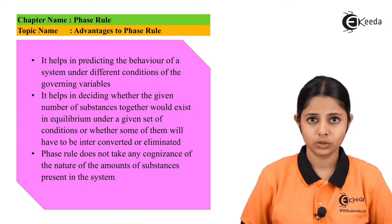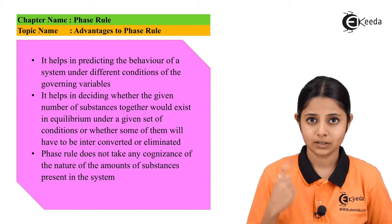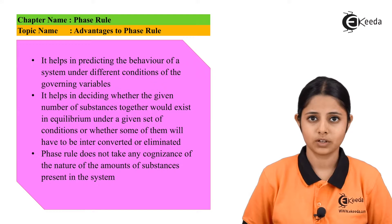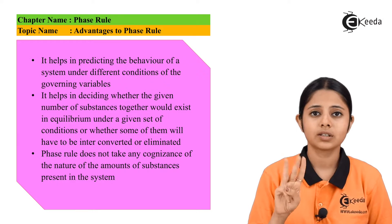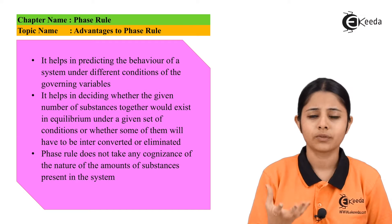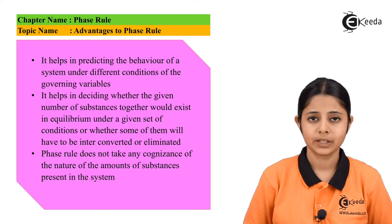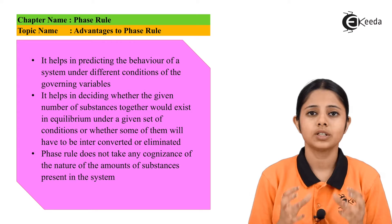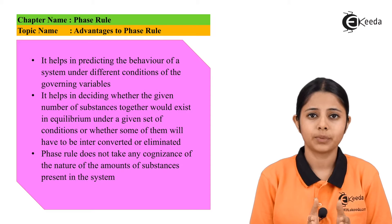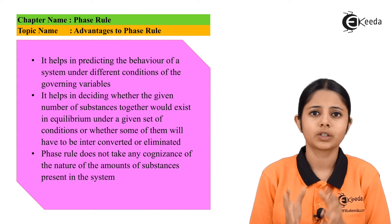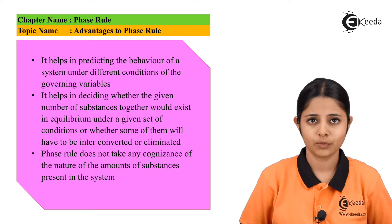The fifth advantage of phase rule is it works upon three things: temperature, pressure and concentration. And over here, these three variables can actually change the equilibrium of any system of mine. And that is the reason why we can actually see the effect of temperature, the effect of pressure or the effect of concentration on any system of ours.